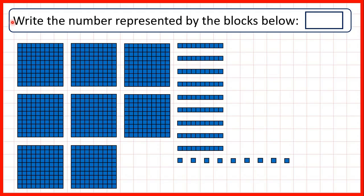We need to write the number represented by the blocks below. Here we can see that we have these blocks, which are ones, then we have these, which are tens, and we also have these blocks here, which are hundreds.